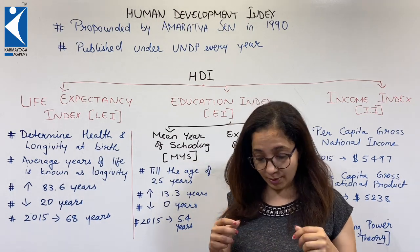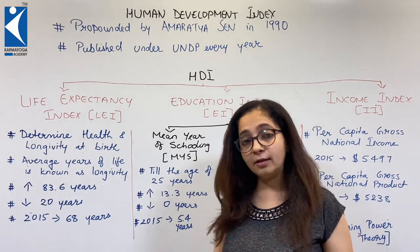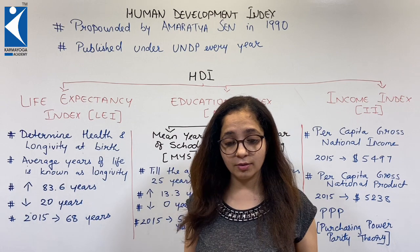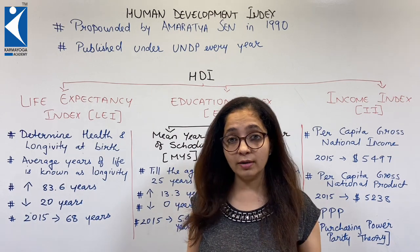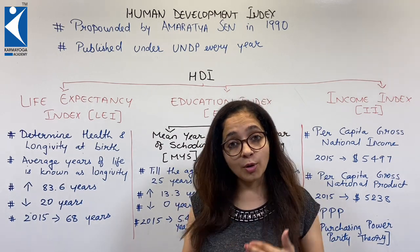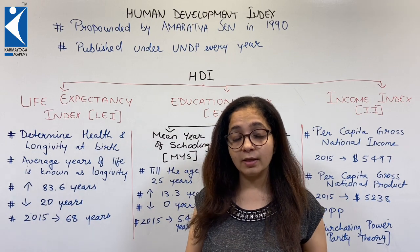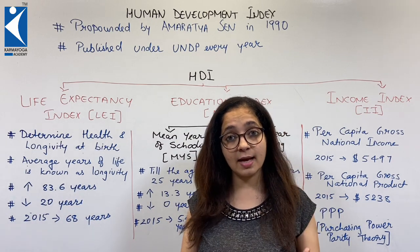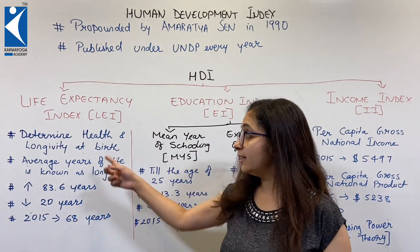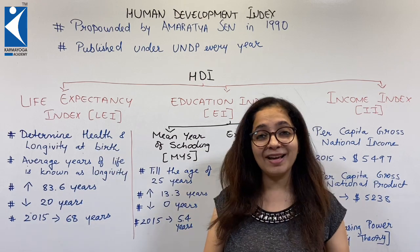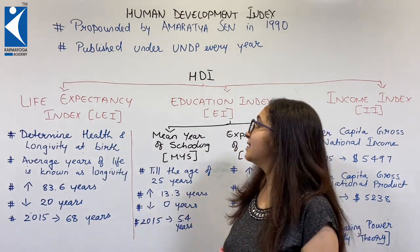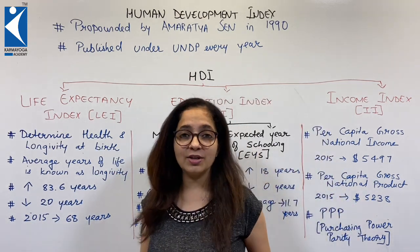When you are young, avoid or at least lessen junk food. Work upon your health and fitness — regular exercise, yoga, cycling, playing some sport can really help this Life Expectancy Index go higher. Next is the Education Index.